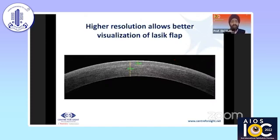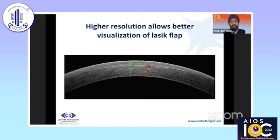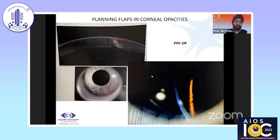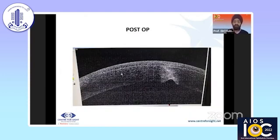Earlier, when looking at enhancement in LASIK flaps, you had to assess the residual bed thickness. What we used to do a decade or more ago was to lift the flap, do pachymetry, see what the residual bed was, and then decide how much ablation could be done. But with OCT, you can preoperatively look at whether you would have enough stromal tissue for residual power correction. In this particular case, you can see preoperatively there was a paracentral scar at a specific depth, and postoperatively you can see we were able to avoid the scar with the flap we created.